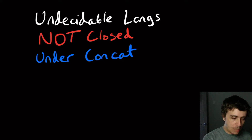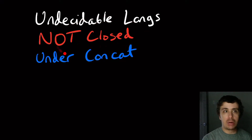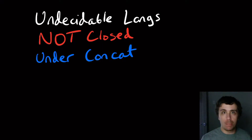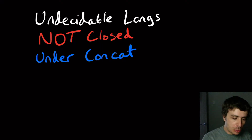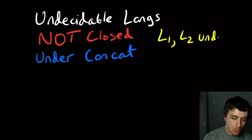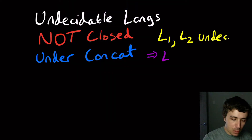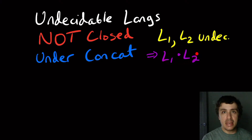I want to show you an interesting problem, which is showing that undecidable languages are not closed under concatenation. You can show that this property still holds among other sets, such as non-regular languages, non-context-free languages, and a whole bunch of things, but I'm going to show it for undecidable. So what does this actually mean to be not closed? If we have two languages L1 and L2 that are undecidable, then what we're going to show is that L1 concatenated with L2 is not necessarily undecidable — it may actually be decidable.